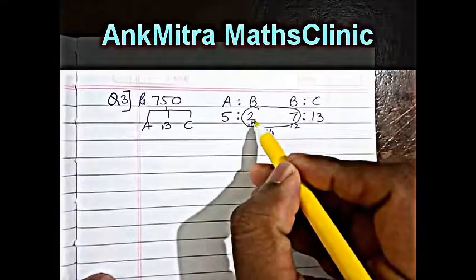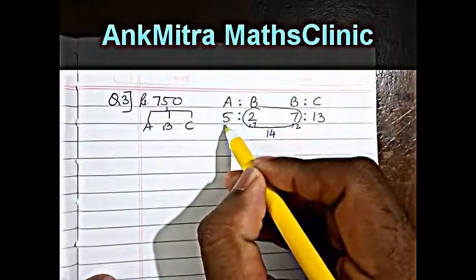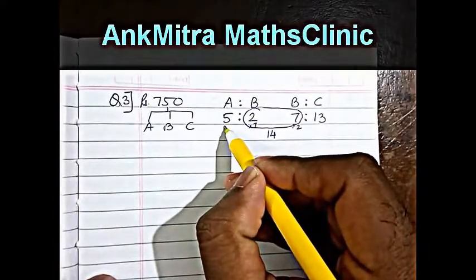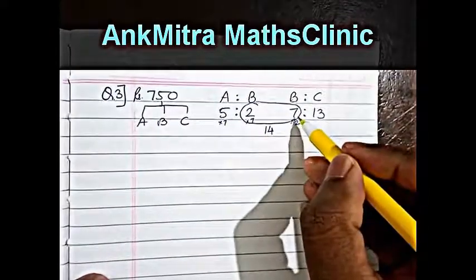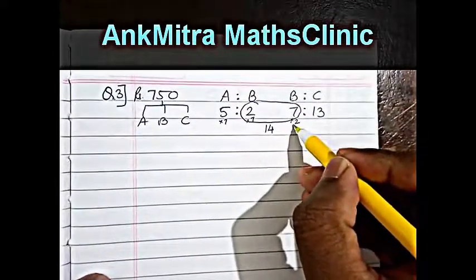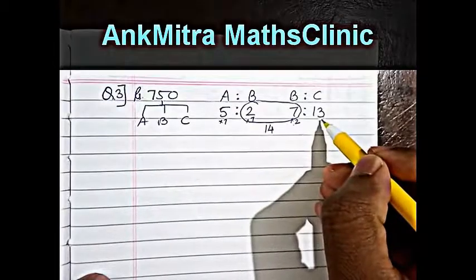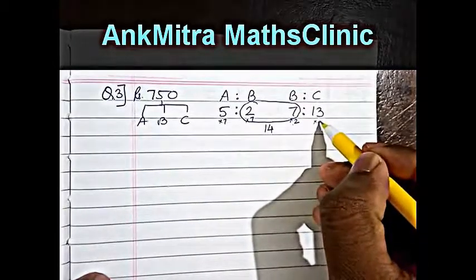So if this number is multiplied by 7, the corresponding value in the ratio will also have to be multiplied by 7. Similarly, since this 7 is multiplied by 2, the corresponding value in this ratio will also be multiplied by 2.